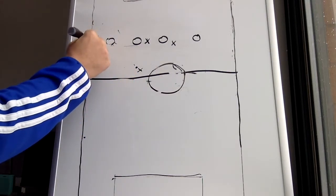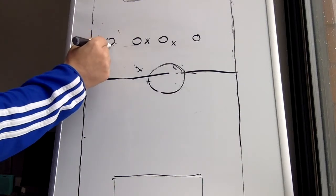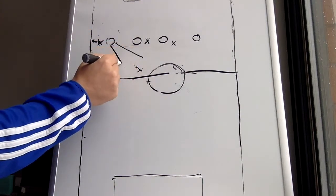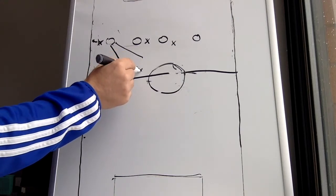So if the winger takes a position out wide, he pulls away from the defender, right? Out wide. Now the defender, his line of sight is here. So he's looking at the ball. He's looking at the center mid.